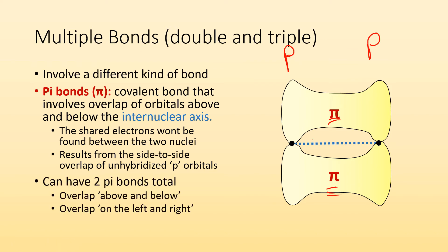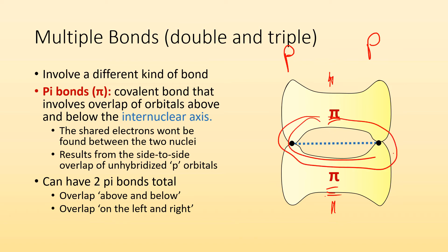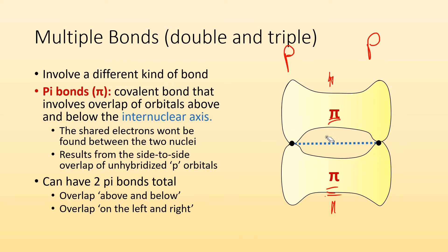So you can have up to two pi bonds between two atoms. You can overlap above and below the internuclear axis, or on the left and the right. It's hard to picture this in 3D, but instead of it being above and below, it could be behind those two nuclei and then in front.